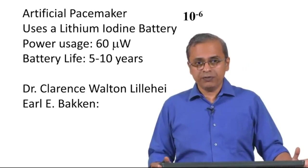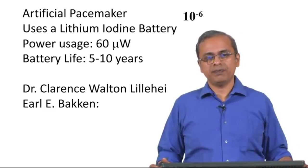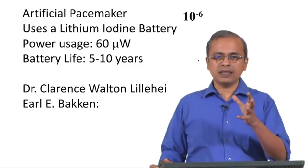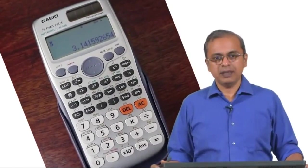For example, there is this thing referred to as the artificial pacemaker. If you see, most of us, in fact all of us, have in our heart a tissue which is referred to as the pacemaker. This is the tissue that decides how fast our heart operates.